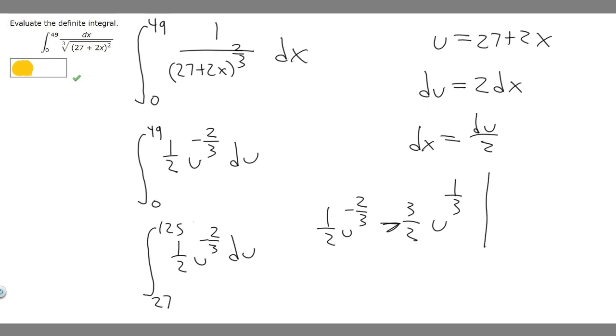Now what we've got to do is evaluate it from our upper bound and lower bound, 27 and 125. We're going to plug in 125, get a value, minus whatever 27 is plugged into it. So let's plug in 125. We have 3/2 times 125 raised to the 1/3. 125 raised to the 1/3 is going to give us 5. And then 5 times 3/2 should give us 15/2, which is 7.5. So when we plug in 125, we get 7.5.